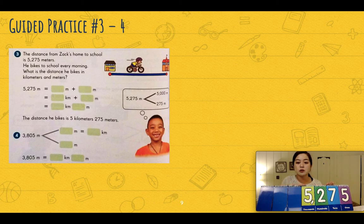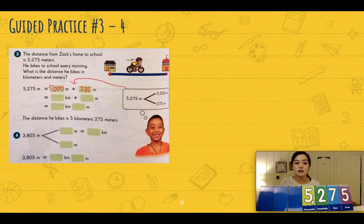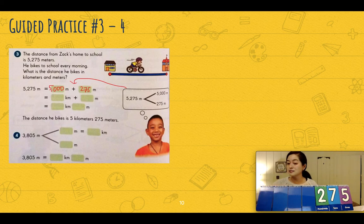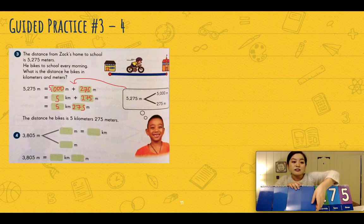In five thousand two hundred and seventy-five, our goal is to see how many thousands there are. Looking at the thousands place, there are five thousands. So the leftover meters are two hundred and seventy-five. Five thousand meters is five groups of one thousand, which equals five kilometers, and two hundred and seventy-five meters is the leftover. The distance he bikes is five kilometers and two hundred and seventy-five meters.